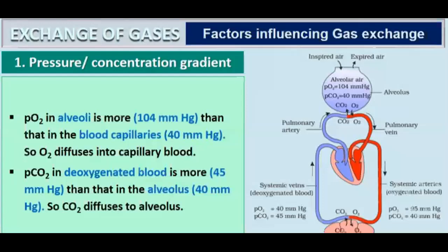Let us read about partial pressure. If a mixture of gases is present, we call it partial pressure, indicated by 'p' before the molecule name. The pO2 in alveoli is more — that is 104 mmHg — than in the blood capillaries, so O2 diffuses into the capillary blood.